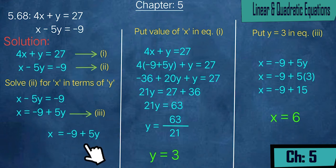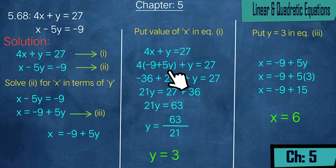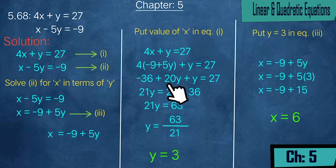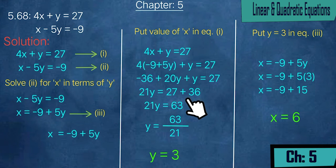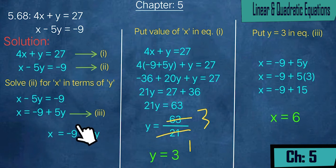Now we put the value of x into equation 1: 4x + y = 27. Where x appears, we write (-9 + 5y). So 4(-9 + 5y) + y = 27, giving -36 + 20y + y = 27, and 21y = 27 + 36 = 63. Dividing: y = 63/21 = 3. Now with y = 3, we put it into equation 3: x = -9 + 5(3) = -9 + 15 = 6.